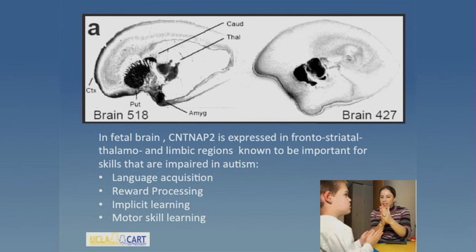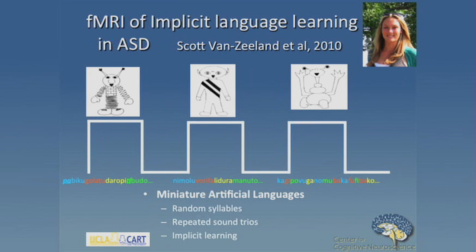It's also a circuitry that's important in other aspects we think are critical to the development of autistic behaviors, including reward processing, implicit learning, and motor skill learning — all of which are part of the autism spectrum. To look at the regions associated with language development in kids with autism, I want to point out this study done by our former graduate student Ashley Scott Van Zelen. We call this the Alien Languages Study.